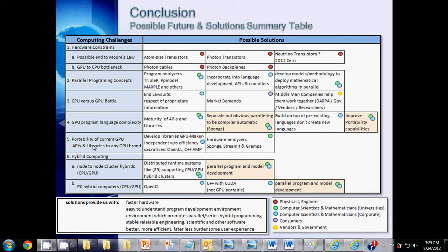So in conquering all these challenges, it would provide us with faster hardware, easier to understand program development environments, environments which promote parallel and series hybrid programming. It would also provide us with stable, reliable engineering and scientific other types of software. And lastly, accomplishing everything in this above table would lead us to better, more efficient, faster and less burdensome user experiences.